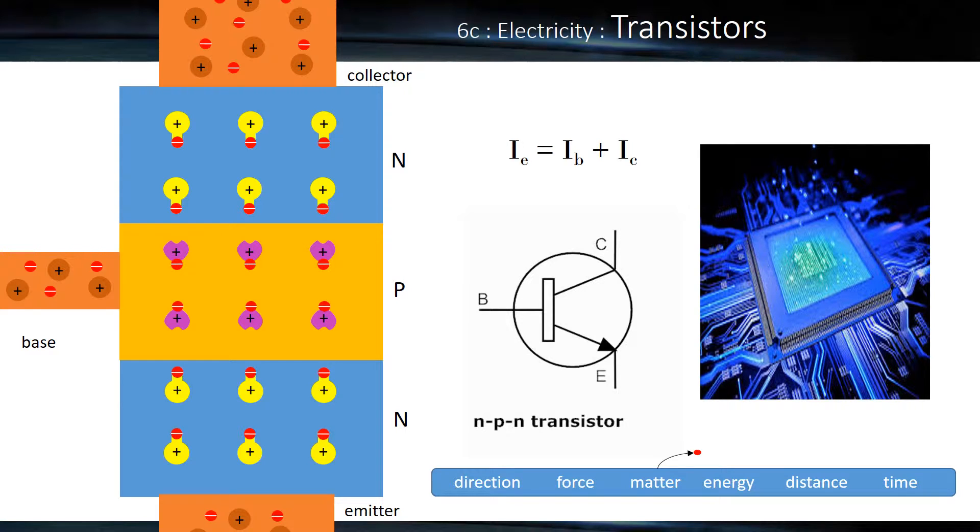This is unit 6C. It deals with transistors and logic gates. Over here on the left we have a zoomed-in animation of a transistor. A transistor is basically a very tiny on-off switch.